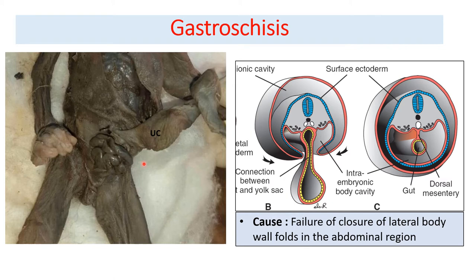The second anterior body wall defect is gastroschisis — again herniation of abdominal contents through the anterior abdominal wall, but with a different cause. The cause here is failure of closure of the lateral body wall folds in the abdominal region. As described earlier, the lateral folds approximate to form the anterior abdominal wall. In gastroschisis, these lateral body folds fail to close, creating a permanent defect in the anterior abdominal wall through which abdominal contents herniate.